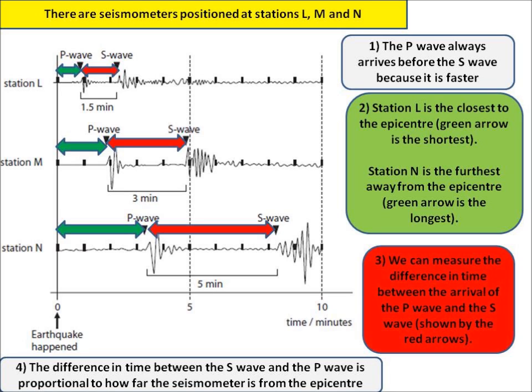Lastly, and this is the most complicated point, the difference in time between the S wave and the P wave, that difference is shown by the red line, is proportional to how far the seismometer is from the epicenter, and that's shown by the green line.